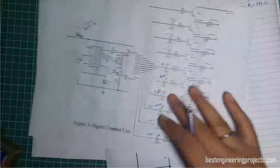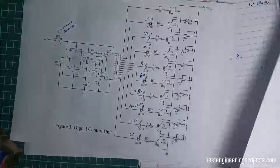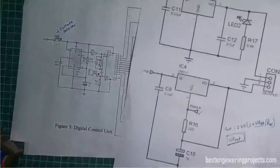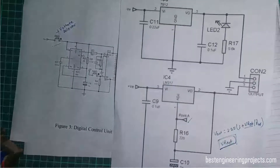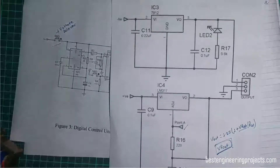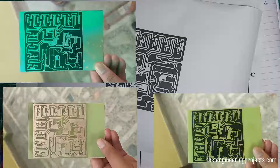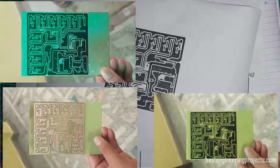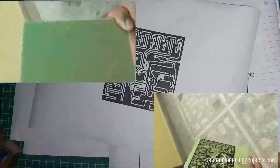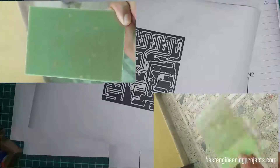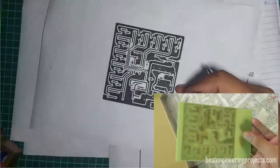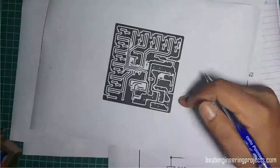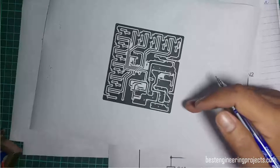You can download this circuit from basedengineeringprojects.com — the link is given in the description section. From there you can download the PCB diagram, including the solder-side PCB, component-side PCB, and 3D design.